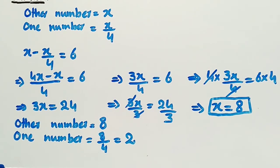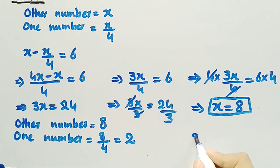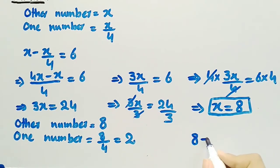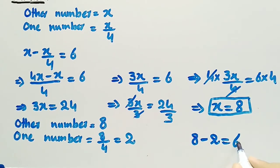In the question, it is given that the difference of the other number and one number is equal to 6. We can clearly see that the difference of 8 and 2 — that is 8 minus 2 — is equal to 6. So these are the two required numbers.